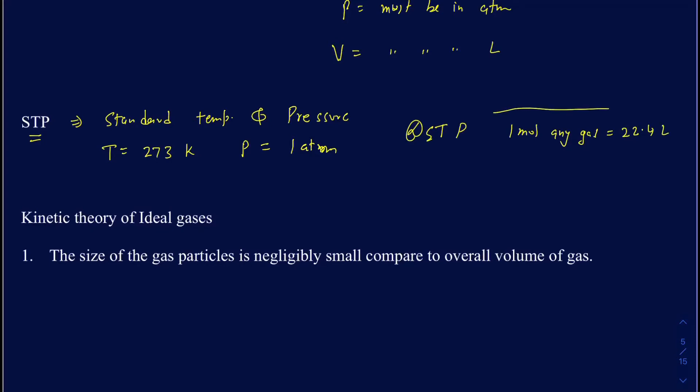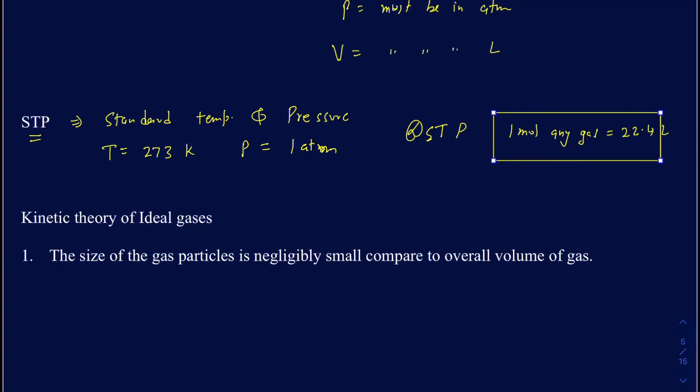Also know this conversion factor: at STP, 1 mole of any gas is equal to 22.4 liters. It doesn't matter which particular gas you're talking about — if it's 1 mole at 1 atm and 273 Kelvin, or in other words at STP conditions, it's going to be 22.4 liters. You can use that relationship to solve problems.